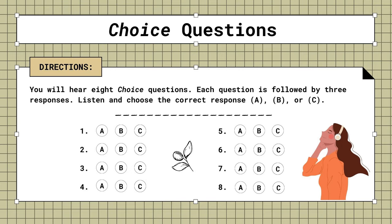1. Would you like milk or sugar in your coffee? A. Both, thank you. B. Yes, I'd like that. C. No, not at all.